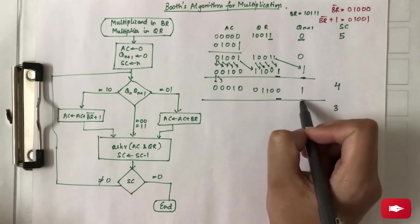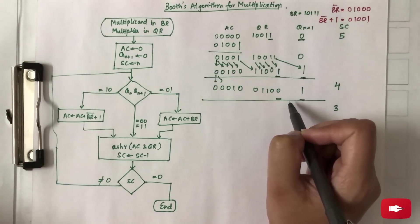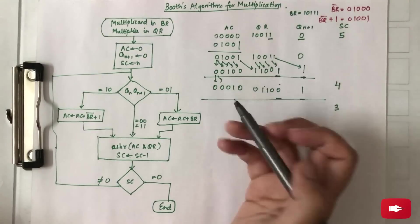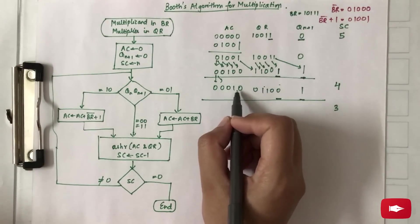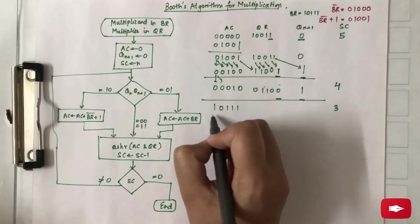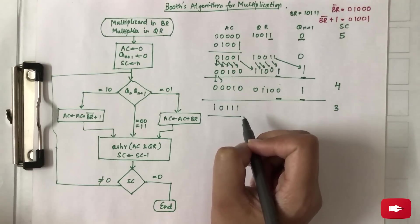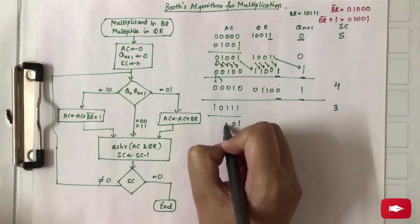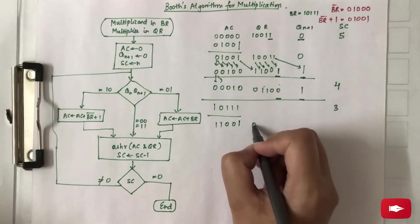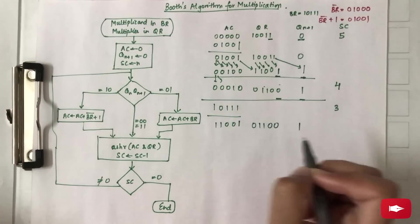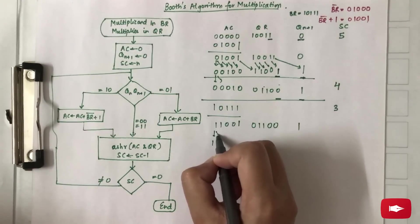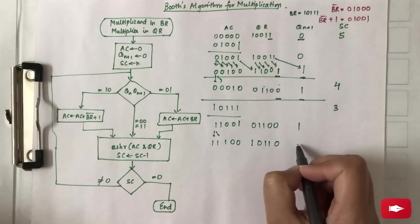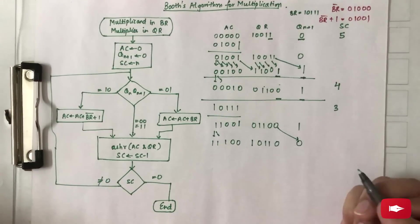Now the value of Q_N and Q_N+1 is 0,1 — that means addition has to be done. The value of B_R is to be added to A_C: 00010 is added to 10111, giving the result 01100010. Performing the arithmetic shift right: 1, 1, 1, 0, 0, 1, 0, 1, 0 with a 0 coming here.